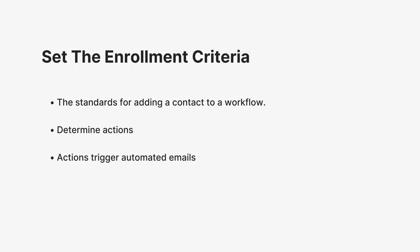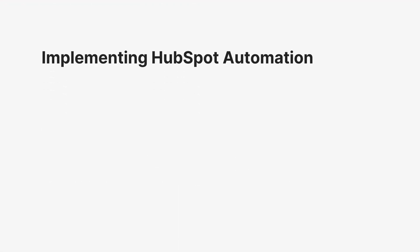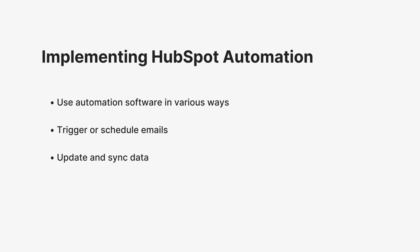In HubSpot, enrollment criteria are the standards for adding a contact to a workflow. This will determine what actions users take that will trigger automated emails to be sent out. Because HubSpot's automation can be used in a variety of ways — for example, an action may trigger an email to be sent, it may trigger an email to be scheduled, or it may just update and sync data using the new information provided — decide how you want to implement the automation software based on your audience and goals.